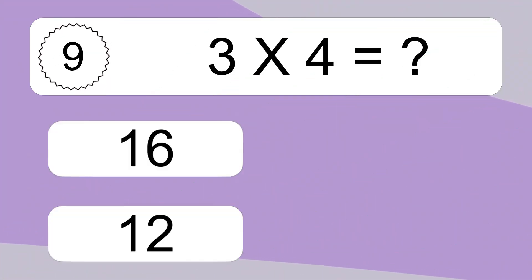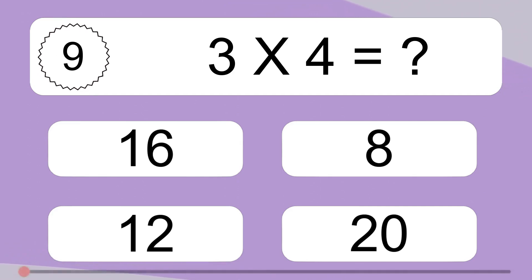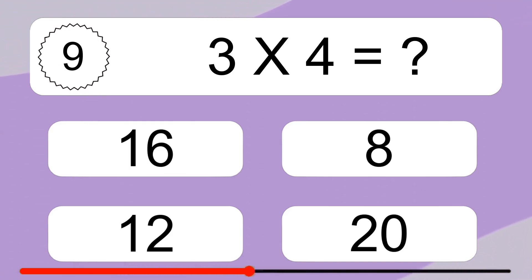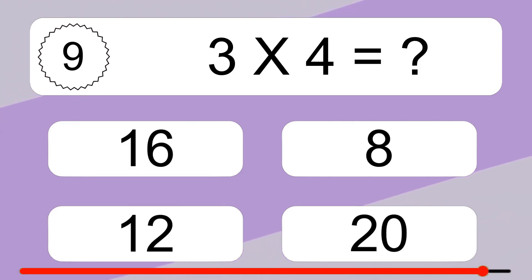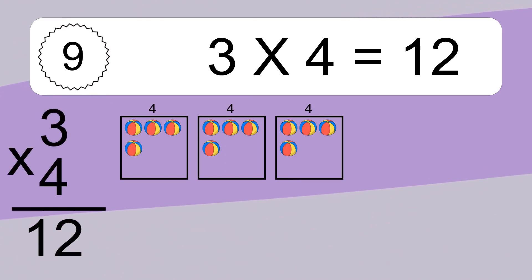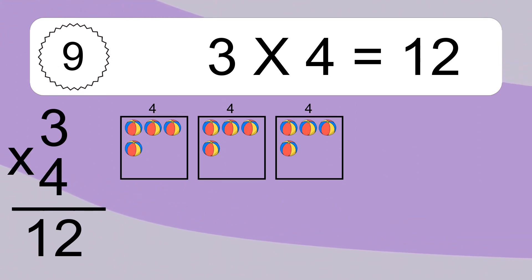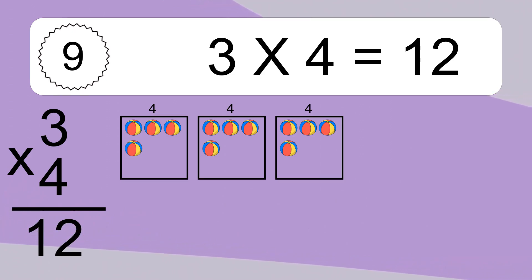3 times 4 equals what? 3 times 4 equals 12. We have 3 boxes, and each box has 4 colorful balls inside. If you count all the balls in all the boxes together, you will have 3 times 4 balls. This equals 12 balls.